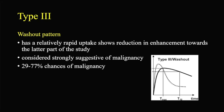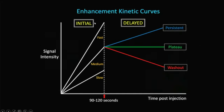We have to look at two things: slow, medium, or fast initial uptake — the first two minutes are important, ideally 60 to 75 seconds — and then what is happening after that: whether it is washing out, plateauing, or persistently slowly enhancing. This is the angle theta we discussed earlier. The greater the angle, the faster the uptake, and rapid uptake is more towards the malignant side — the Type 3 curve.